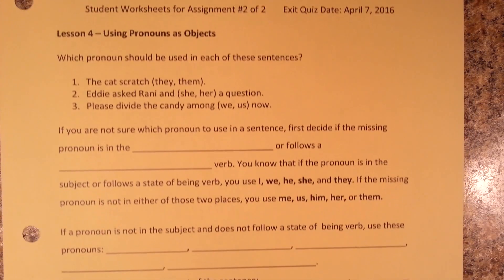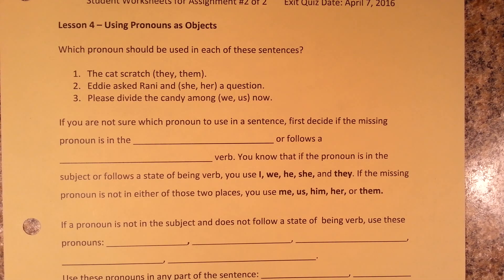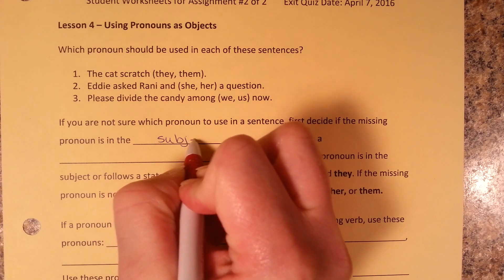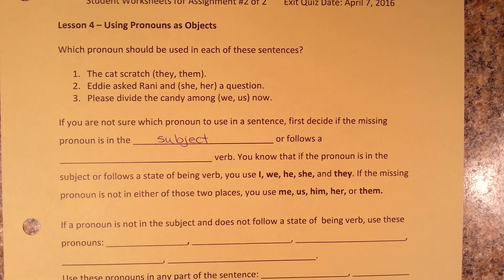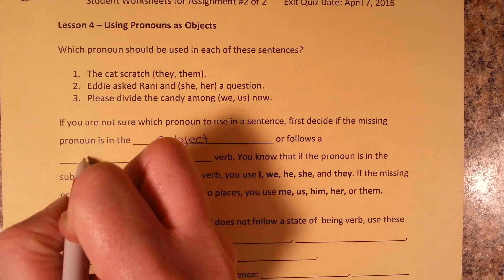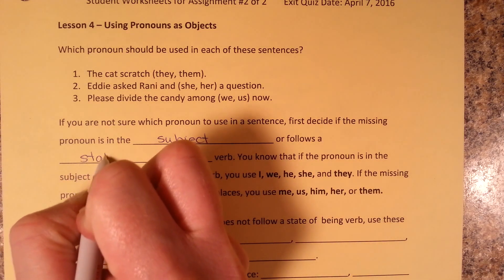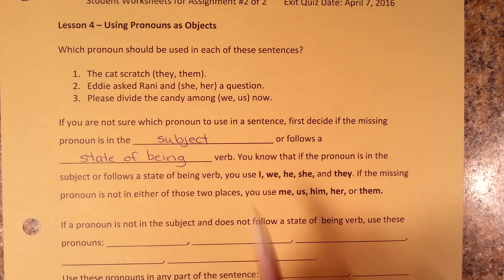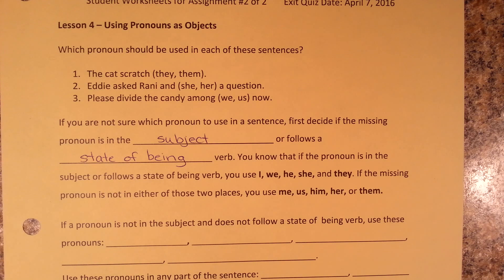If you're not sure which pronoun to use in a sentence, first decide if the missing pronoun is the subject or follows a state of being verb. You know that if a pronoun is the subject or follows a state of being verb, you use I, we, he, she, and they.